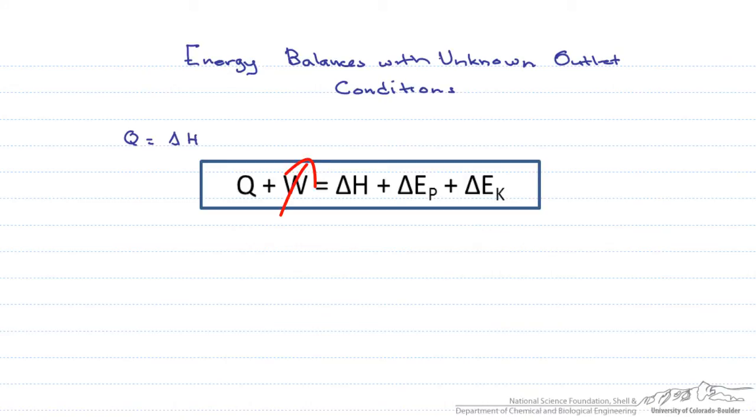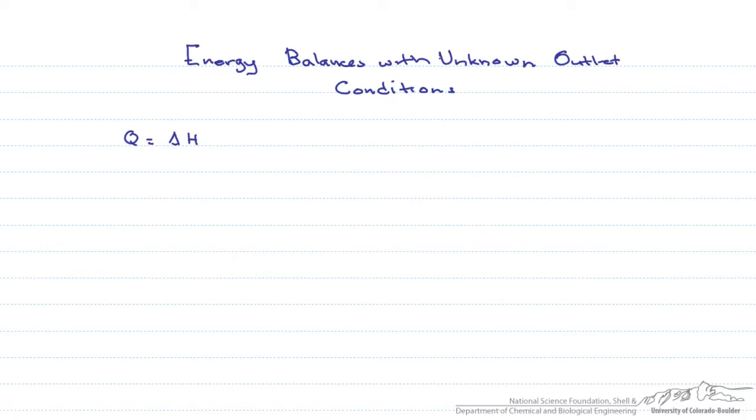Assuming negligible work, potential, and kinetic energy, instead of finding Q we are given Q and we need to find the outlet temperature so that we can solve for the enthalpy of our products.